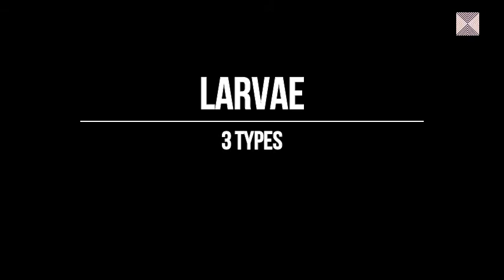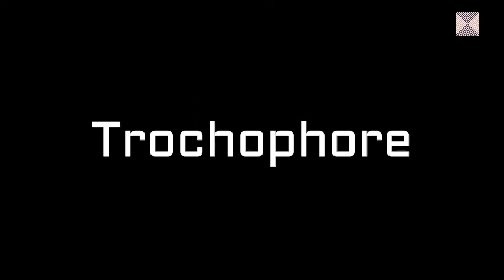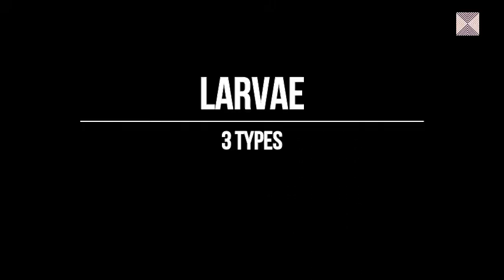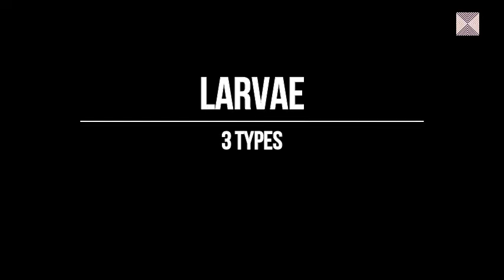Basically three types of larvae are found in the phylum Mollusca. The first larval stage is the trochophore larva, the second is the veliger larva — which is very important as far as molluscs are concerned — and the third type is the glochidium larva. These are the three types of larval forms found in the phylum Mollusca.